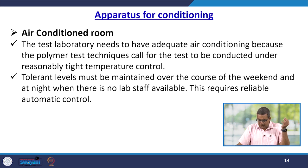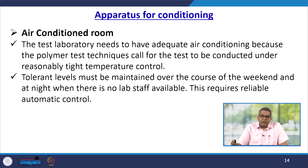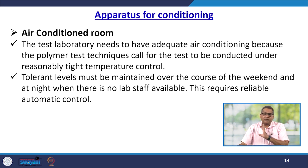Now let us talk about the apparatus for conditioning. A primary requirement is the air-conditioned room. The test laboratory needs adequate air conditioning because polymer test techniques call for tests to be conducted under reasonably tight temperature control. The air conditioning chamber must have proper temperature maintenance plus relative humidity or moisture content. Tolerance levels must be maintained over the course of the entire segment, even over the weekend or at night when there is no lab staff available. This requires reliable automatic control.